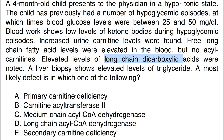Because beta-oxidation is not occurring, free long-chain fatty acids return to the blood and their levels become elevated. Some of those free long-chain fatty acids are diverted into the endoplasmic reticulum and converted into long-chain dicarboxylic acids. That is why in primary carnitine deficiency you see elevation of urinary carnitine, elevation of free long-chain fatty acids, and elevation of long-chain dicarboxylic acids. At this point, primary carnitine deficiency fits as the answer.